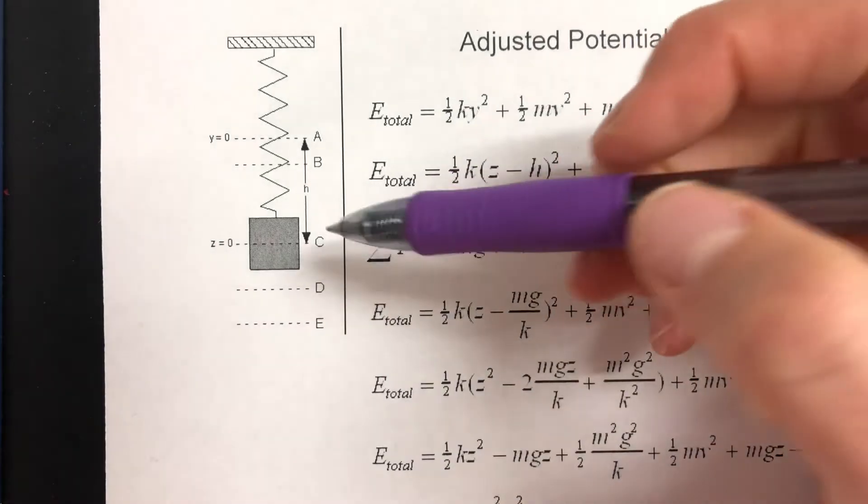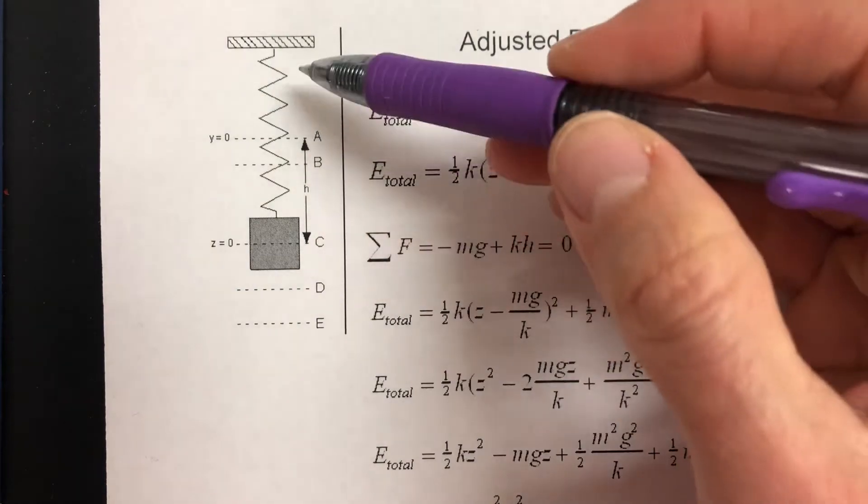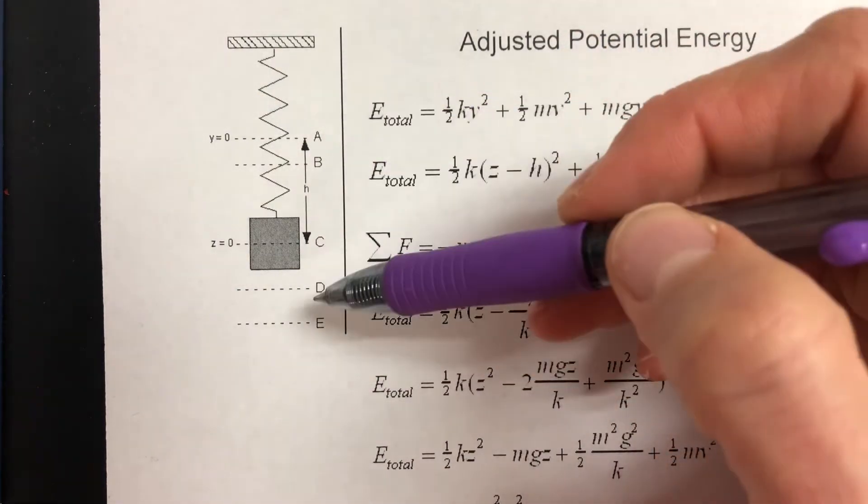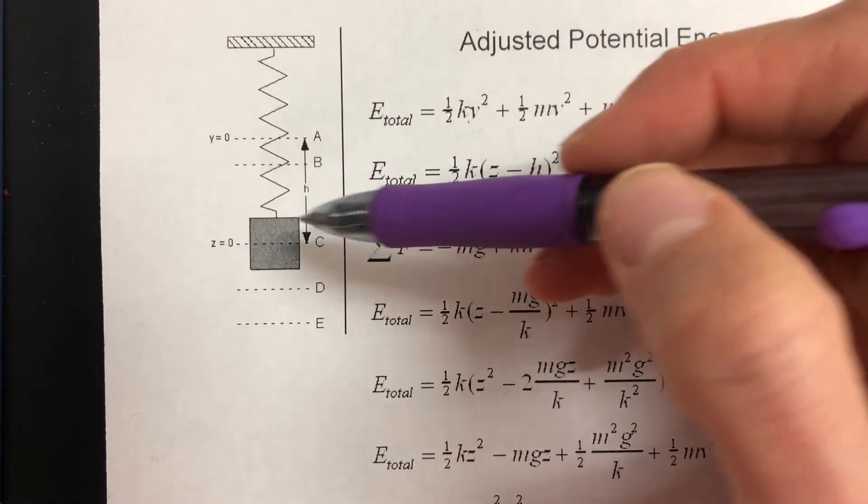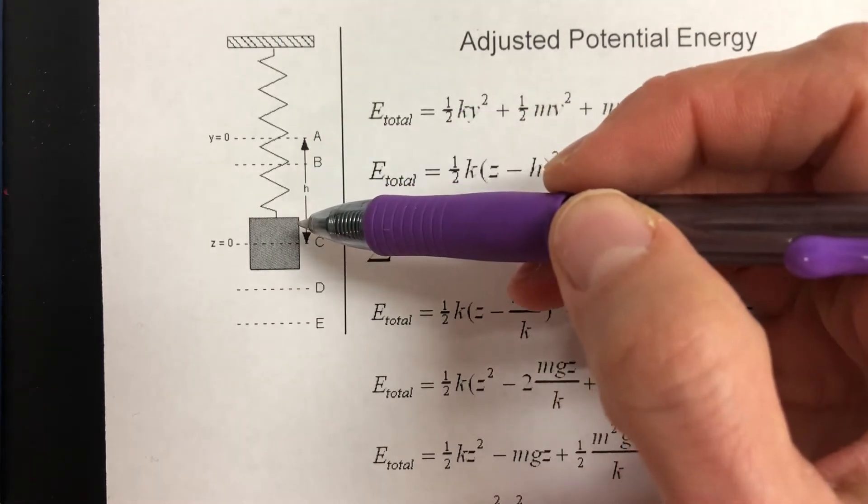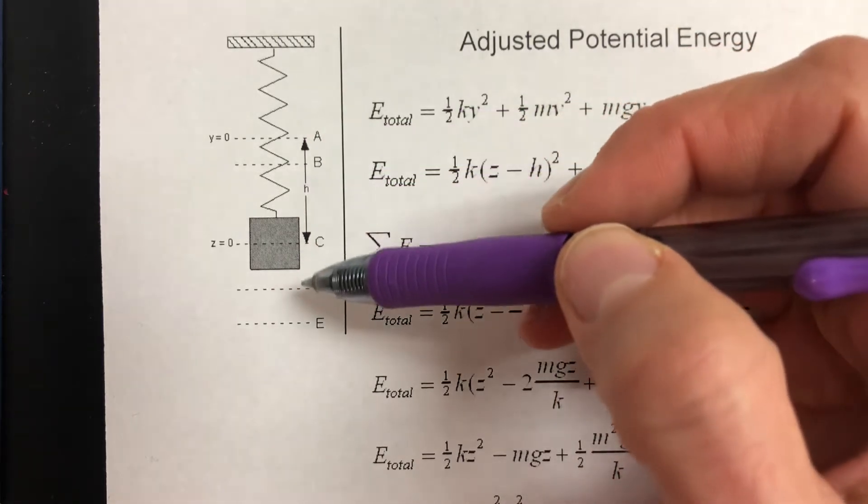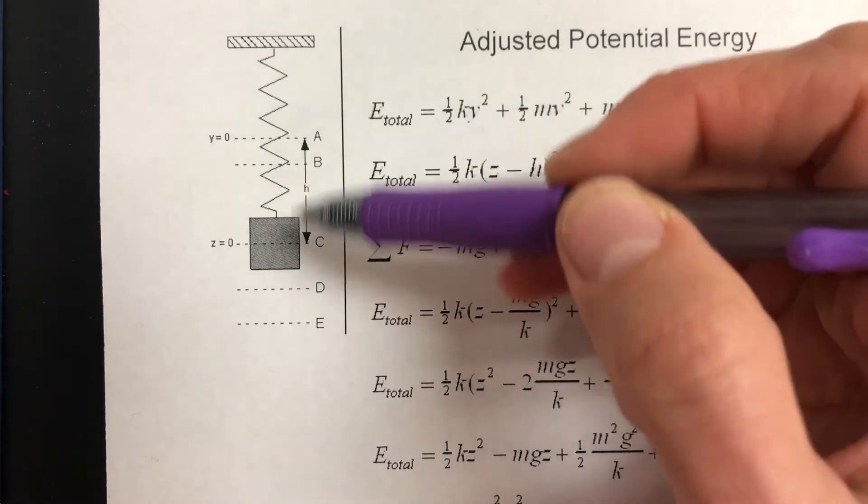You're looking at a system that is oscillating up and down in simple harmonic motion. The system is set up with a mass on a spring and it's oscillating between points B and D and it goes up and down.